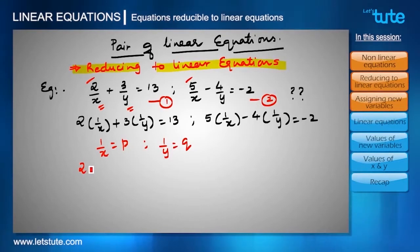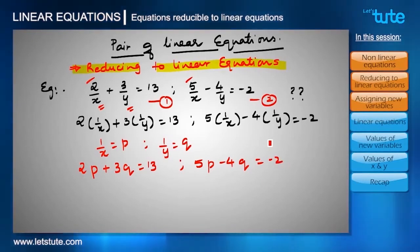Therefore, these two equations become 2P plus 3Q equals to 13, and 5P minus 4Q equals to minus 2. Now we can see that we got two new variables P and Q. If you look at their powers, they are 1, so easily we can identify that these two equations are linear equations.